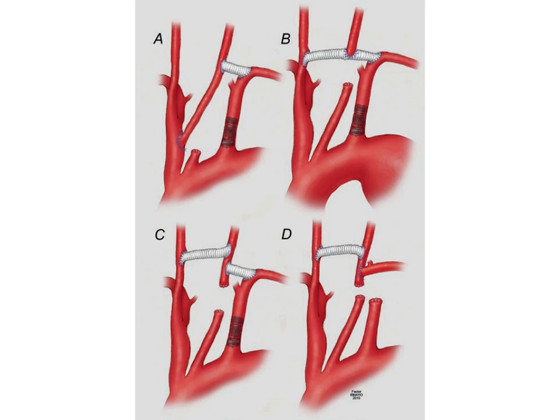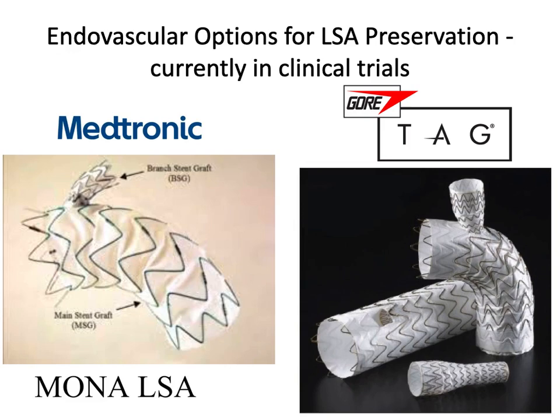Other debranching procedures are available for patients where zone two coverage is inadequate and you also need to debranch the left common carotid artery. It's important to plug the origin of the left subclavian artery, otherwise you get retrograde flow from your debranching procedure into the dissection or aneurysm. Coming through the pipeline are endovascular options for left subclavian preservation, including grafts from Medtronic and Gore.